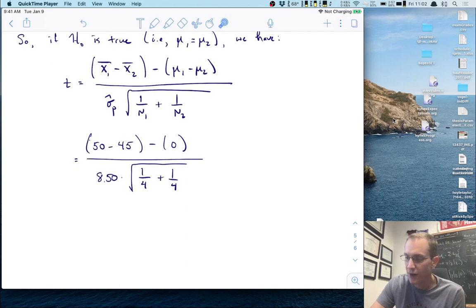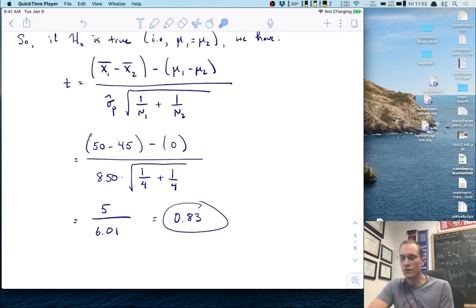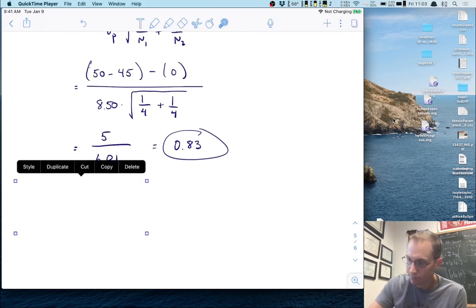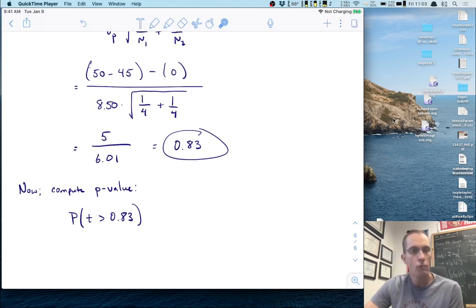The top difference is 5 over 6.01, which simplifies to 0.83. The t-score associated with our data is a little less than 1. We need to compute the probability of finding that t-score if the null is true - the p-value, the probability of getting a t-score greater than 0.83.